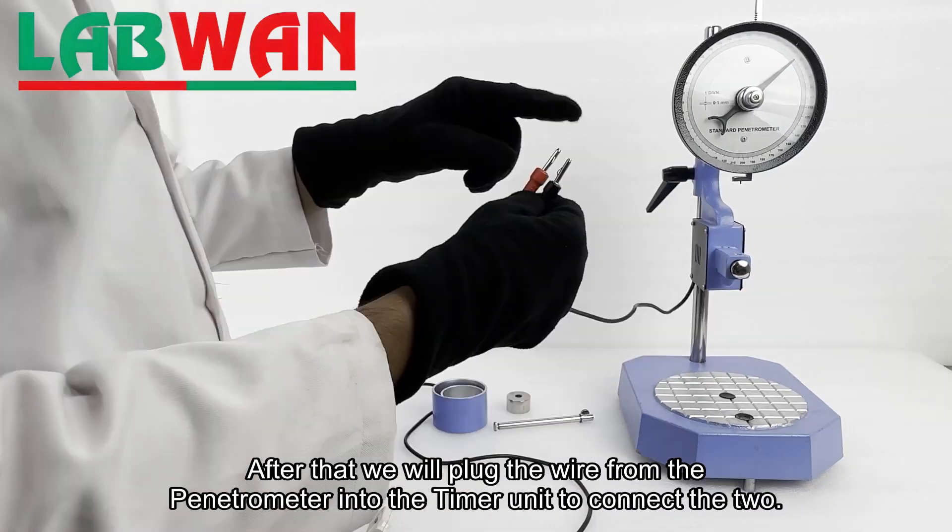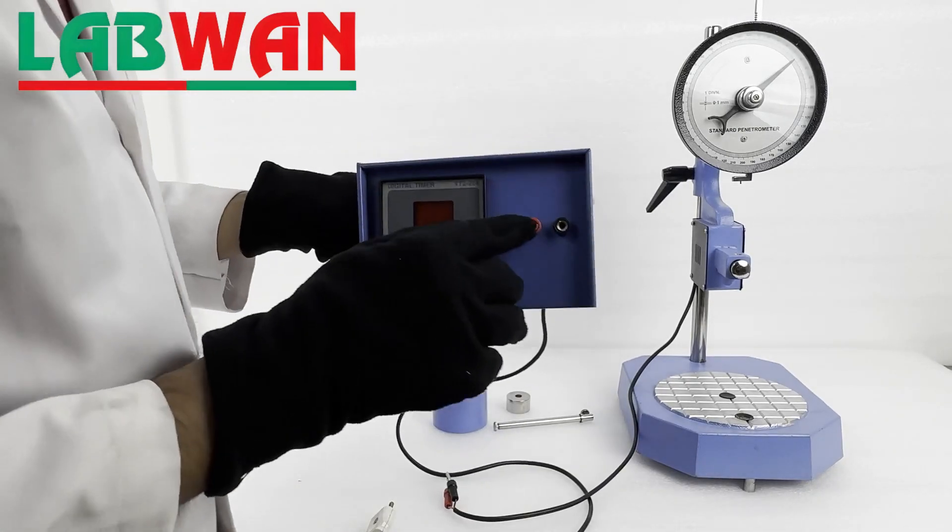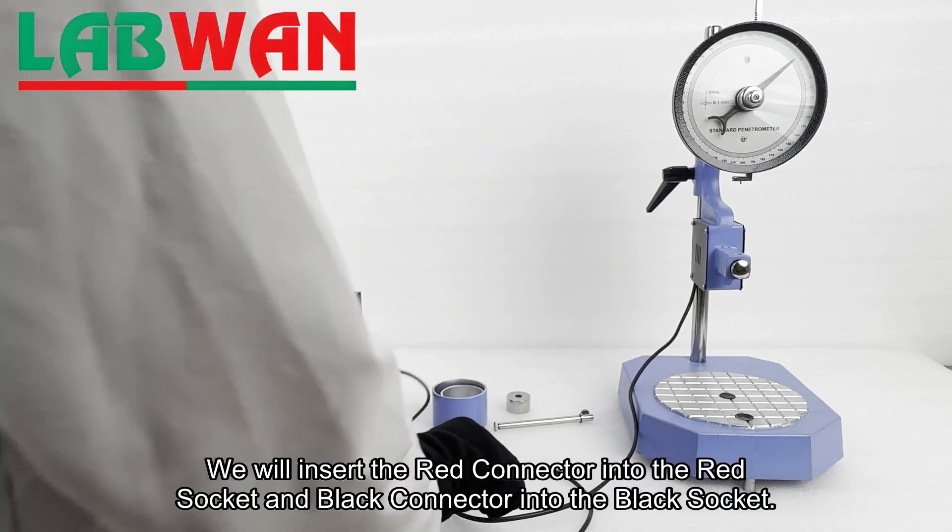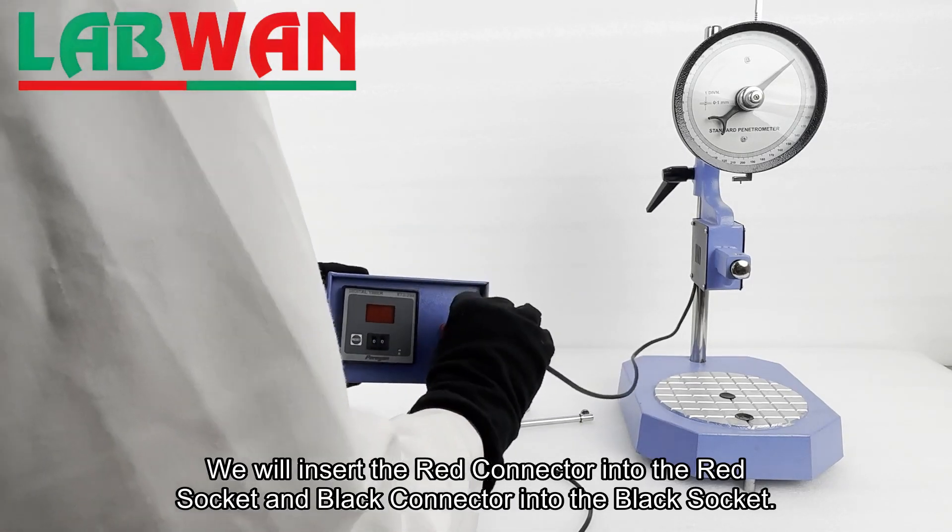After that, we will plug the wire from the penetrometer into the timer unit to connect the two. We will insert the red connector into the red socket and the black connector into the black socket.